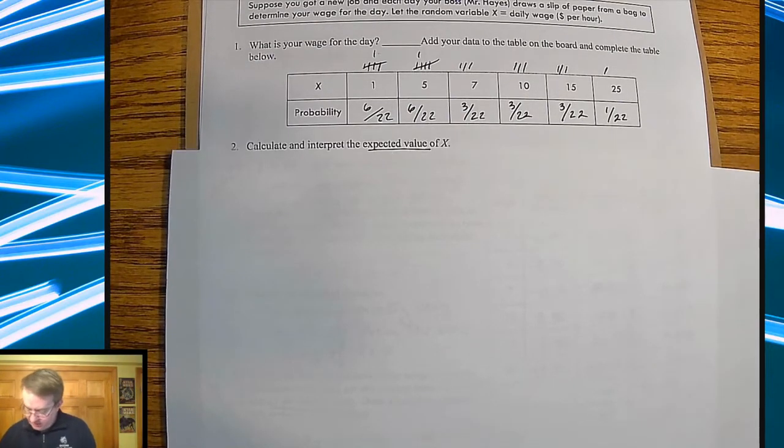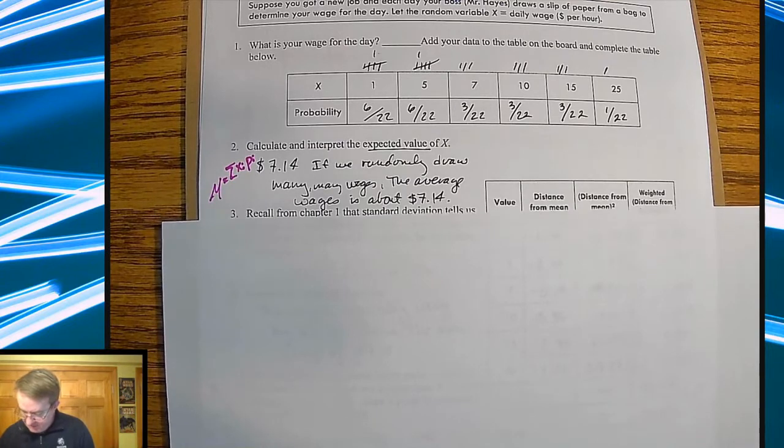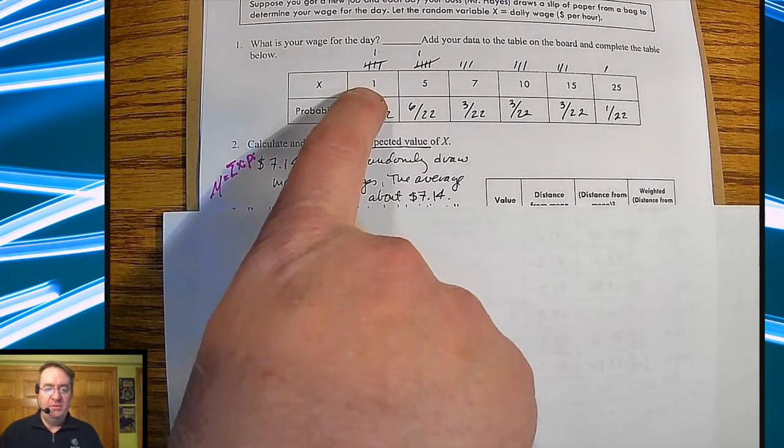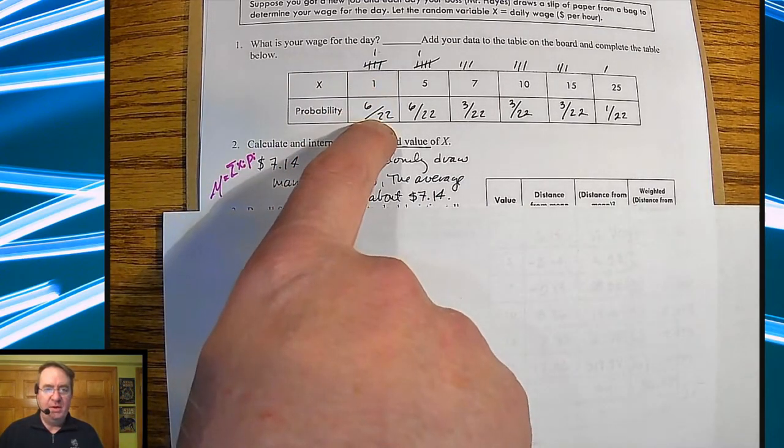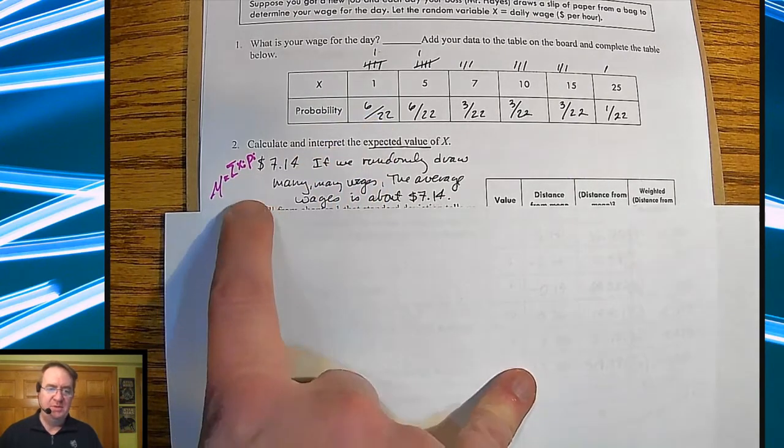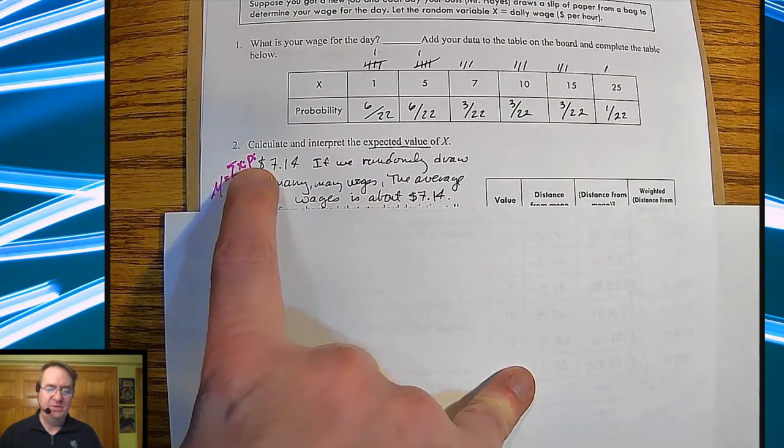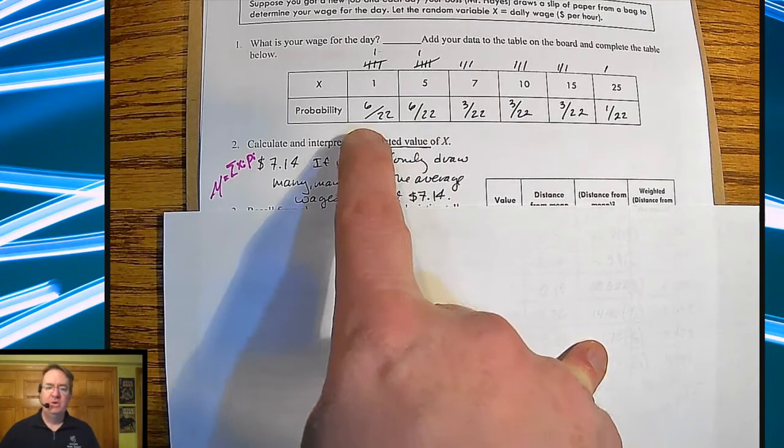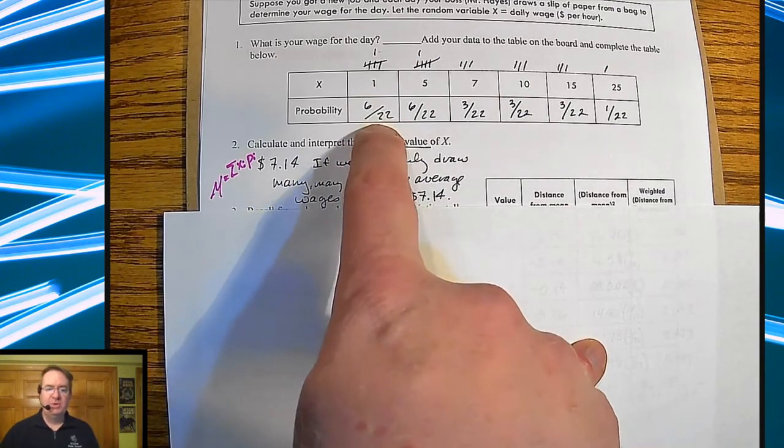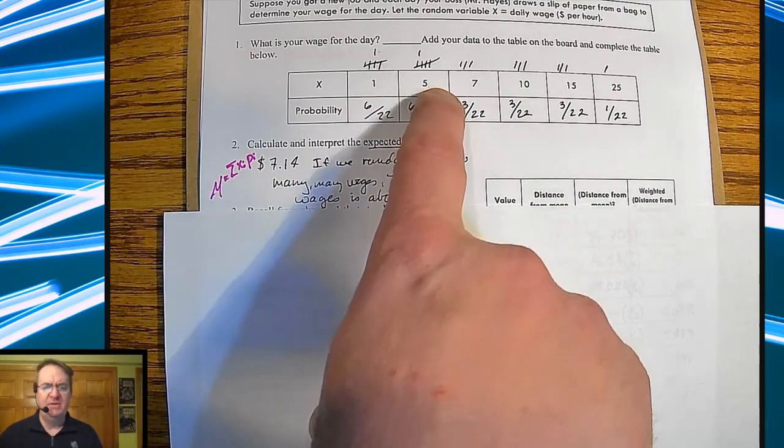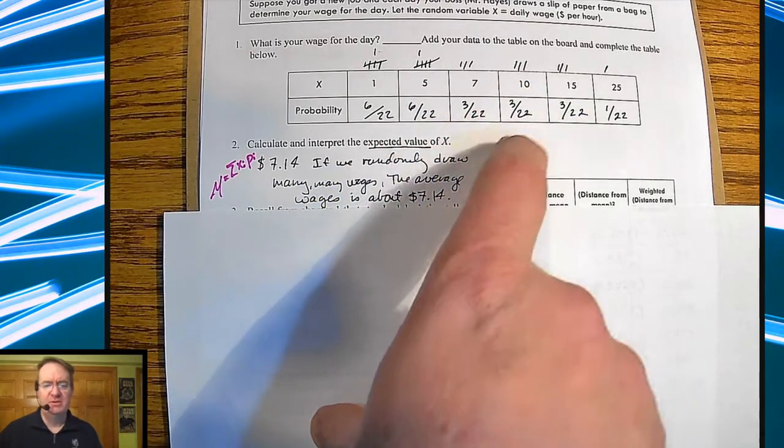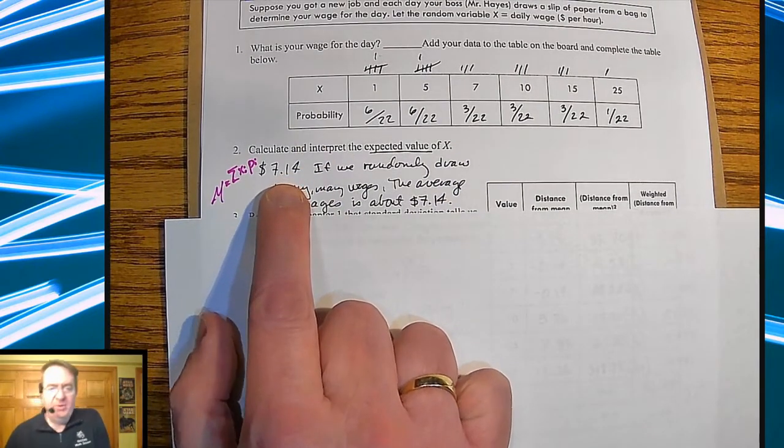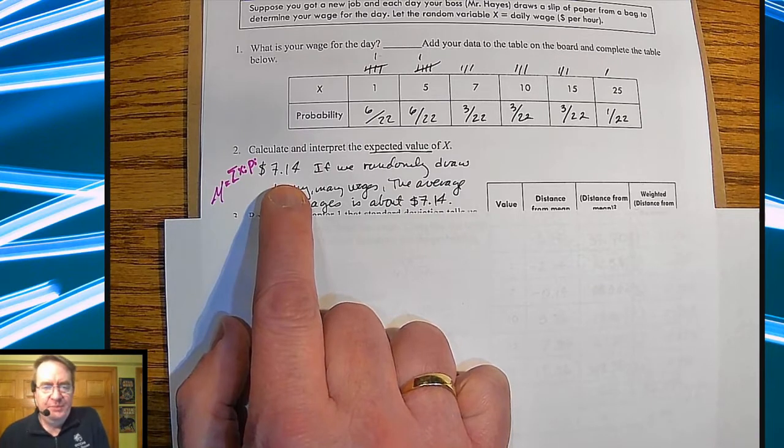What were the first thing that we asked you guys to do is, what is the expected value? Now remember, the expected value is the sum of the different values times the corresponding probability. And that's what this little i means, it just stands for index, so I'm in the first number, the second number, the third number, the fourth number, etc. So to get that, we went 1 times 6 over 22, 5 times 6 over 22, 7 times 3 over 22, etc. When we did all of that, it came up with a wonderful expected value or average salary of $7.14 per day.